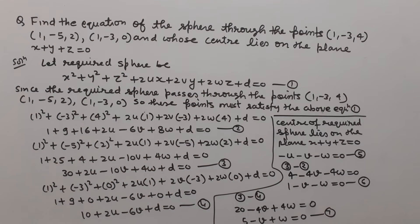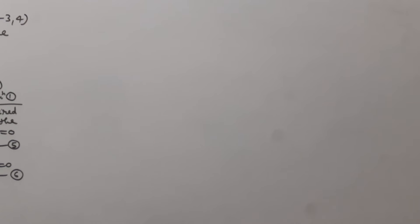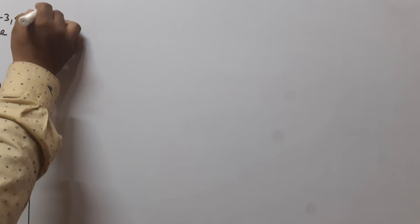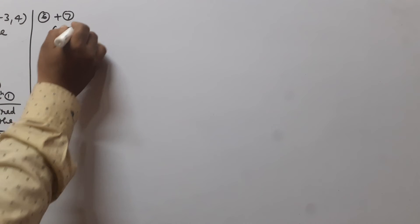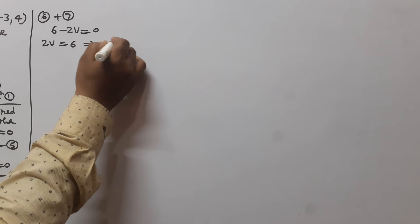Now we solve equations 5, 6, and 7 to find u, v, w, and d, and putting them in equation 1 we get the required sphere. We add equations 6 and 7: (1 - v - w) + (5 - v + w) = 0, giving 6 - 2v = 0, so 2v = 6, therefore v = 3.